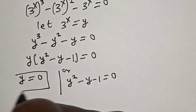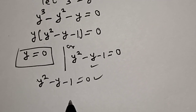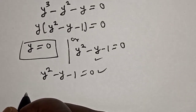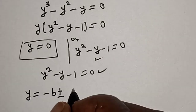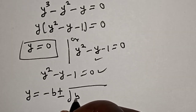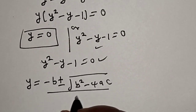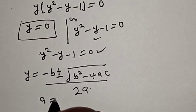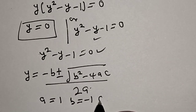Now, Y equal to 0, and let's solve the quadratic equation using the quadratic general formula. Our quadratic general formula gives us Y is equal to minus B plus or minus square root of B squared minus 4AC over 2A. Then A is equal to 1, B is equal to minus 1, C is equal to minus 1.